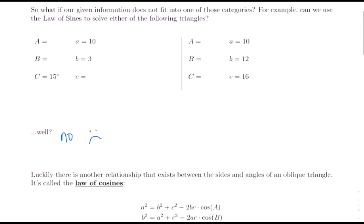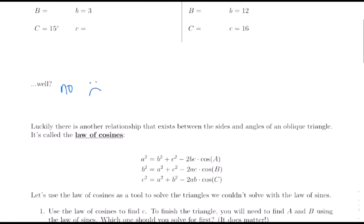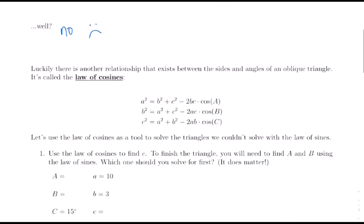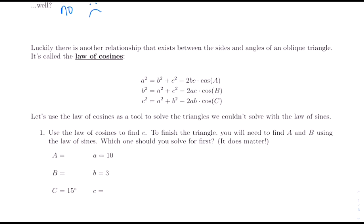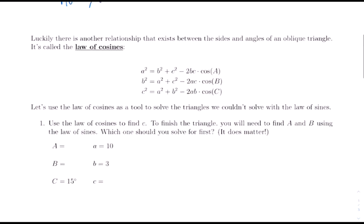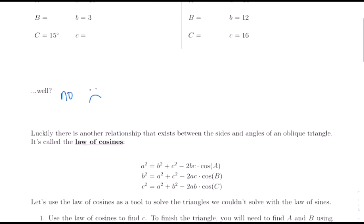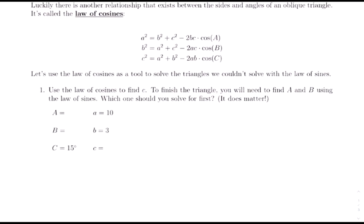We are going to learn the Law of Cosines, which applies to oblique triangles where the Law of Sines doesn't work. The Law of Cosines states: a² = b² + c² − 2bc·cos(A), and this holds in all three versions where each angle matches with its corresponding side. Notice this looks a lot like the Pythagorean theorem, just minus an error term. I only memorize one version and change the letters as needed.